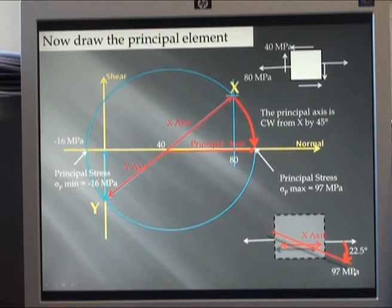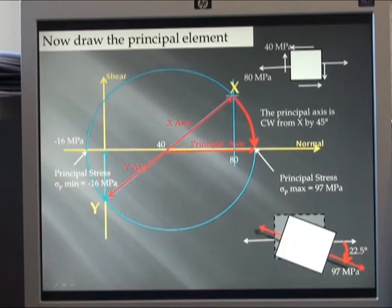I can now take my stress of 97. It is a positive stress. I can draw my tensile arrows on that. Construct my element at that direction. Note that there is no shear on this point. It is on the axis, the zero height line, so there is no shear on my principal element.